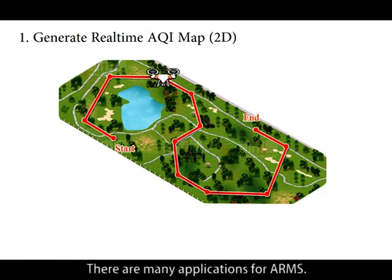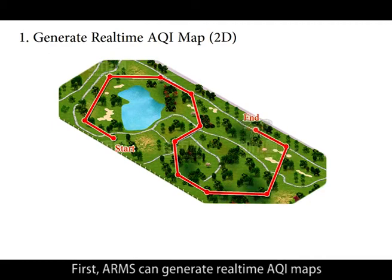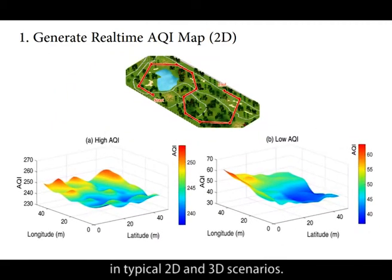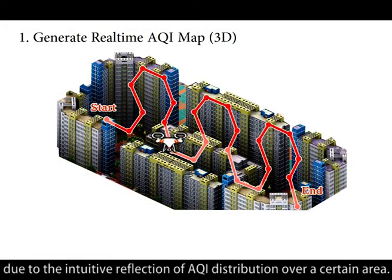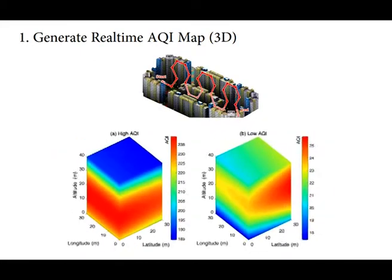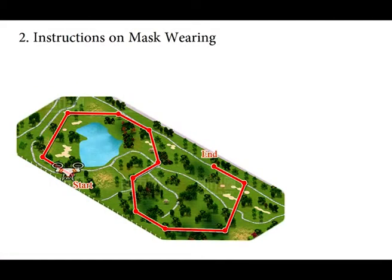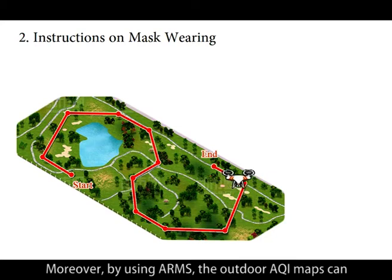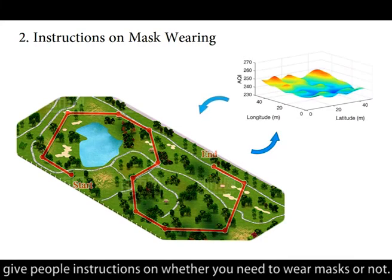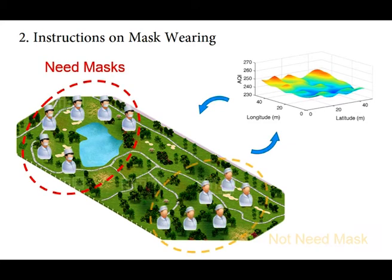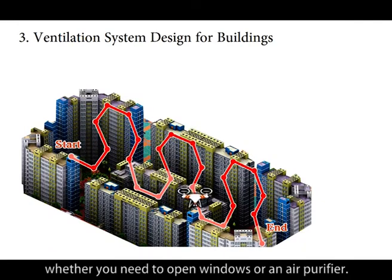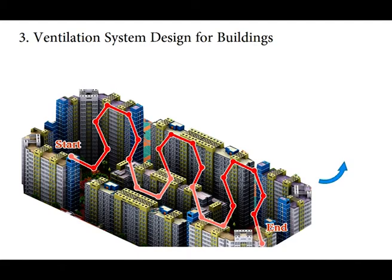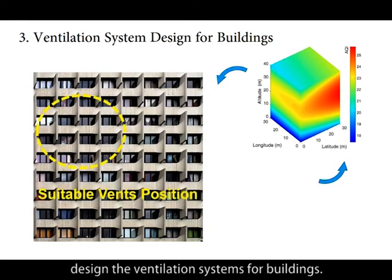There are many applications for ARMS. First, ARMS can generate real-time AQI maps in typical 2D and 3D scenarios. These fine-grained AQI maps are important and meaningful due to the intuitive reflection of AQI distribution over a certain area. Moreover, by using ARMS, outdoor AQI maps can give people instructions on whether they need to wear masks or not. In office building scenarios, ARMS can tell whether you need to open windows or an air purifier, and the AQI map can also help design ventilation systems for buildings.